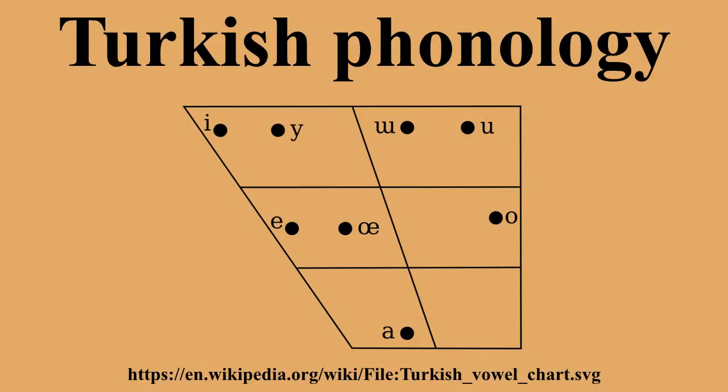The notation -da/de is shorthand for this pattern. Four-fold: both frontality and rounding are preserved. For example, the genitive suffix is -in after unrounded front vowels, -ün after rounded front vowels, -ın after unrounded back vowels, and -un after rounded back vowels. The notation -in(4) can be this pattern's shorthand. The vowel O does not occur in grammatical suffixes. In the isolated case of the verbal progressive suffix -iyor, it is immutable, breaking vowel harmony.